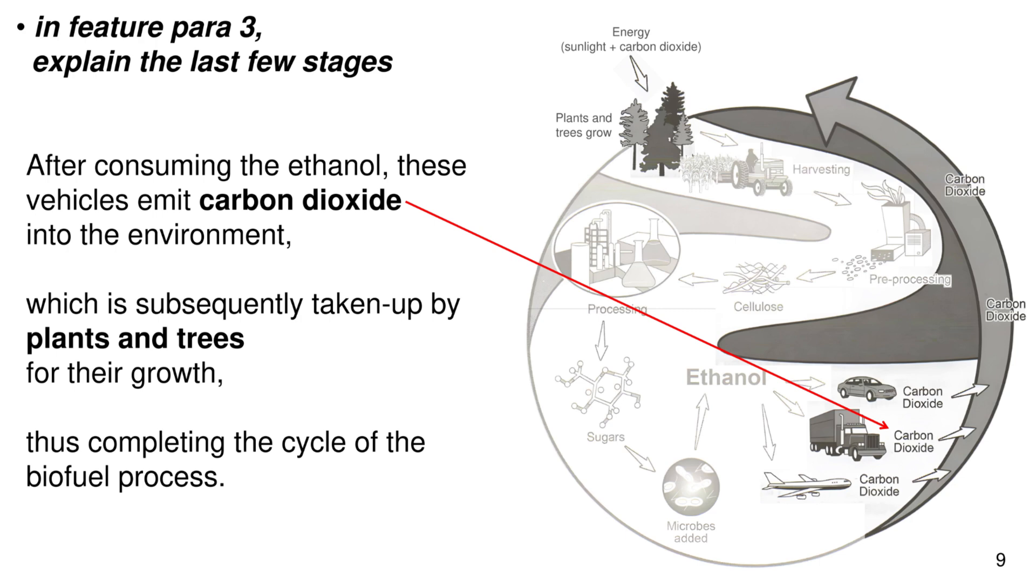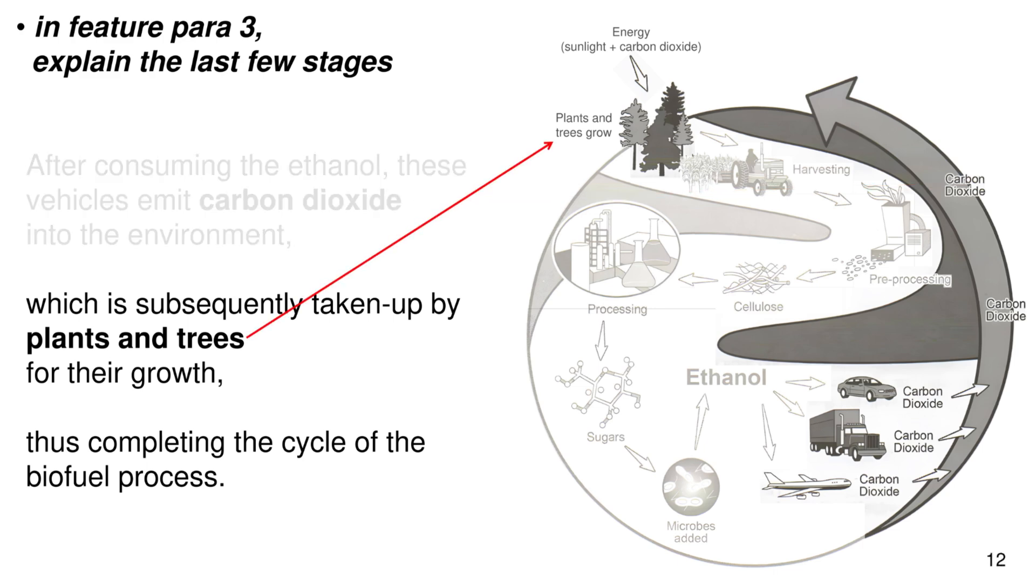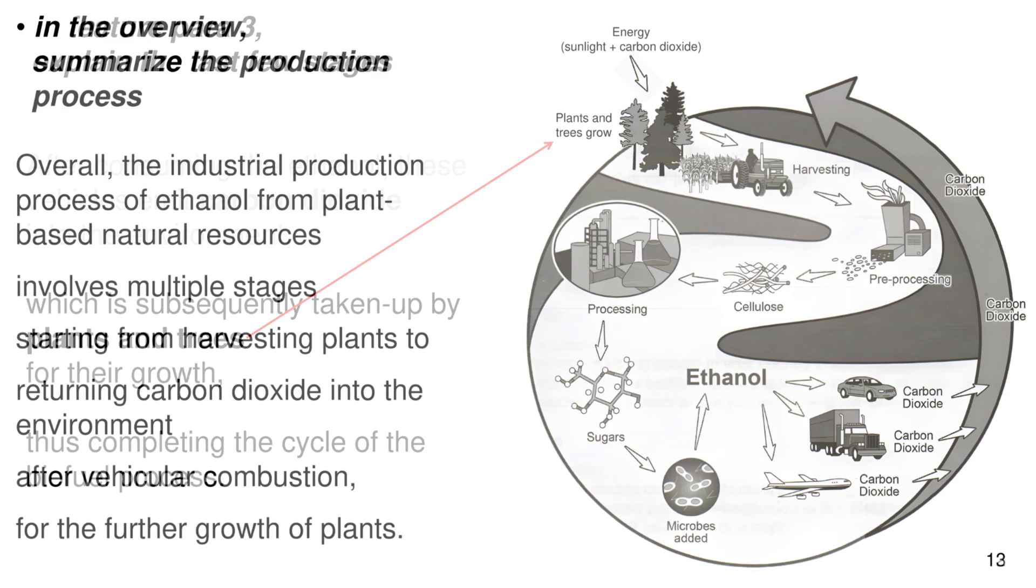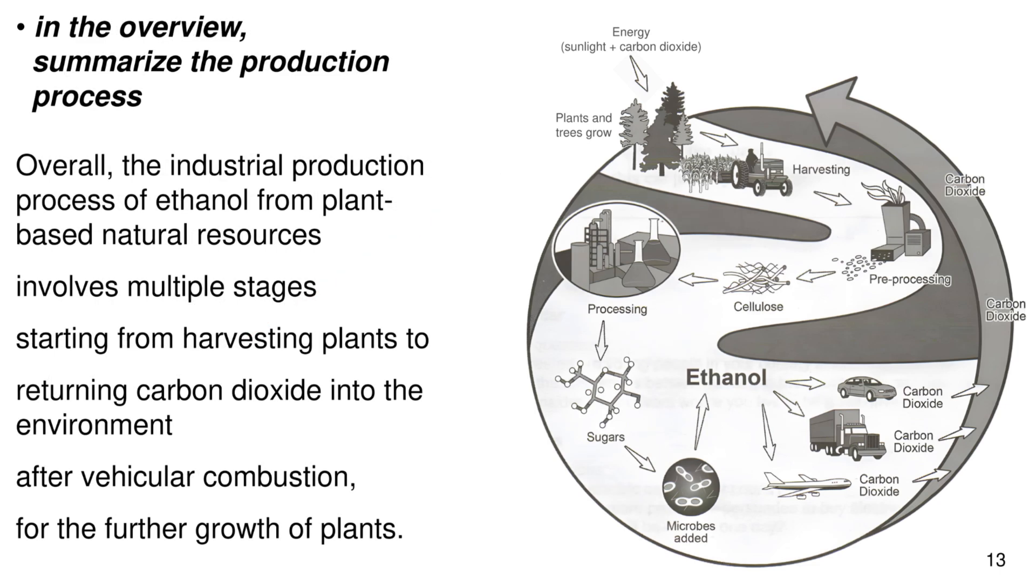In feature paragraph 3, explain the last few stages. After consuming ethanol, these vehicles emit carbon dioxide into the environment, which is subsequently taken up by plants and trees for their growth, thus completing the cycle of the biofuel process.